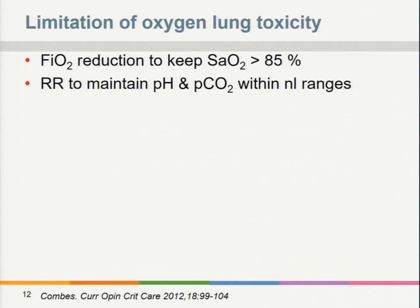So how do we set the ventilator when on ECMO? We reduce FiO₂ to keep saturation above 85%, and we limit the respiratory rate to keep pH and PaCO₂ within normal ranges. The sweep gas will help us achieve that.